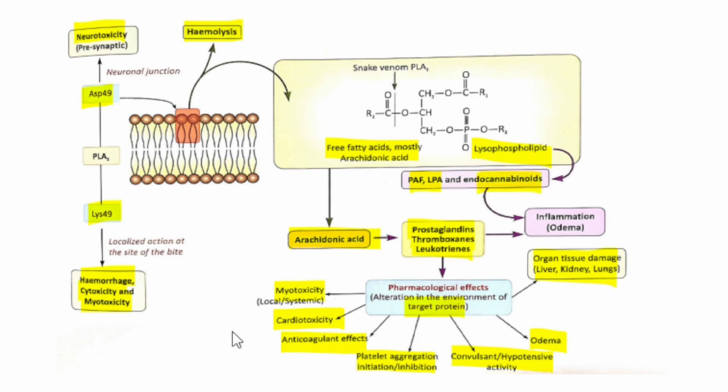Lysophospholipids enter the inflammatory pathway through platelet activating factor, lipoprotein, and endocannabinoids. The product of lysolecithin is a strong surface-active substance that has a marked hemolytic action, destroying red blood cells by hemolysis and demyelinating nerves. Hence, in viper poisoning, hemolysis and consequent renal failure are the main concerns.